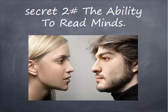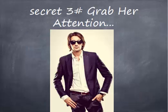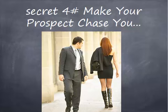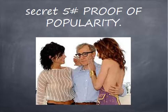Secret two is the ability to read minds — basically being able to get inside your customer's head, feel their emotions and thoughts, and feed them back to them. Secret number three is to grab their attention: we want to get our message across in a meaningful way that keeps their attention. Secret four is to make your prospect chase you — I have a picture of a guy looking at an attractive woman; he's chasing her, not the other way around, and we want people to chase us. Secret five is proof of popularity, also known as social proof — getting testimonials and things of that nature to build our marketing case to our customer.